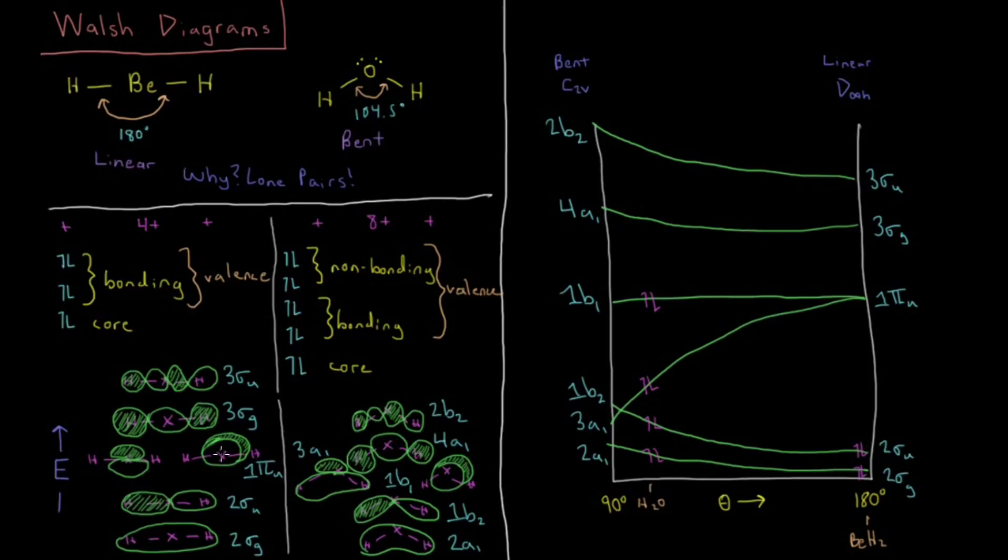But the most interesting thing is one of these 1πu orbitals, as you bend it becomes the 3a1 orbital. And as you bend this, if we call it px here,